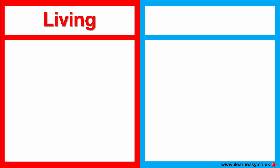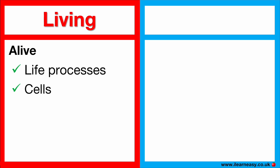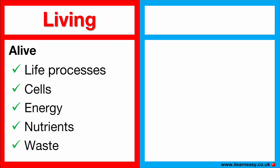Living things are things that are alive. The characteristics of living things are life processes, cells, energy, nutrients and waste. Living things can grow, move, breathe, reproduce, respond to stimuli and adapt to their environment. This is all part of their life processes.